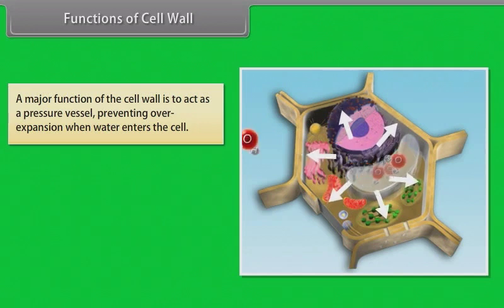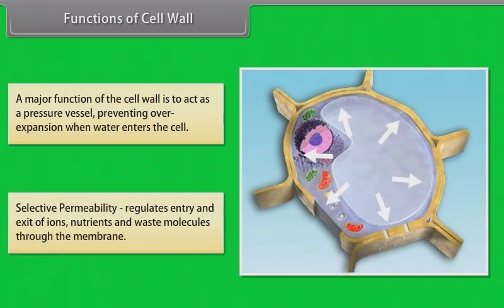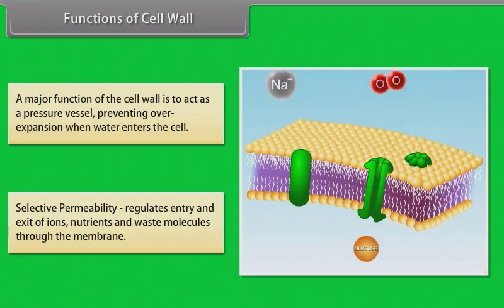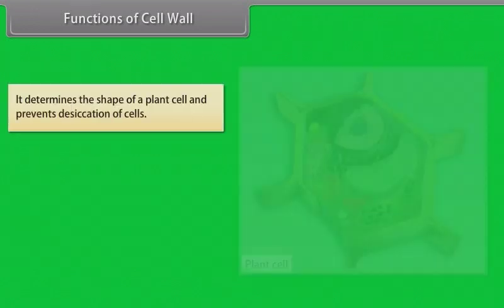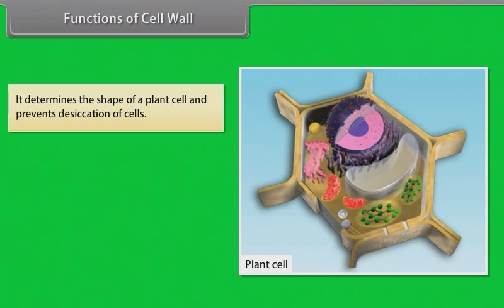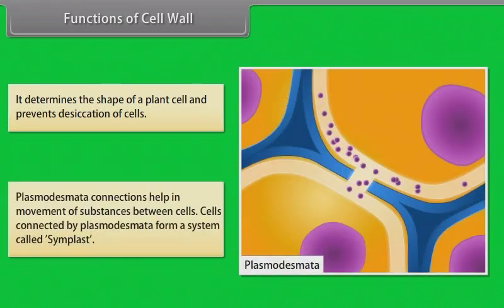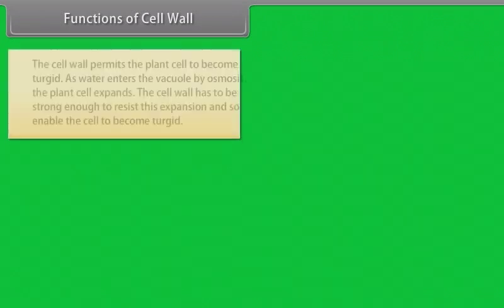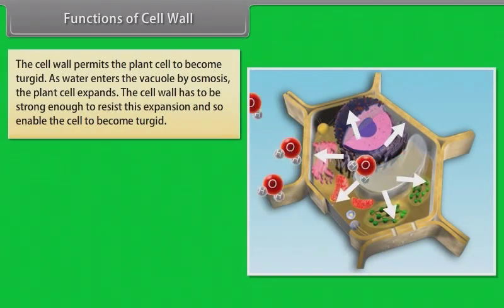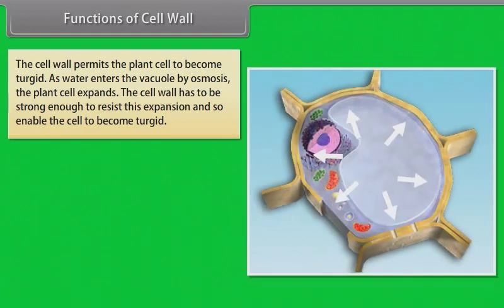Functions of cell wall: A major function of the cell wall is to act as a pressure vessel, preventing overexpansion when water enters the cell. Selective permeability — it regulates entry and exit of ions, nutrients and waste molecules through the membrane. It determines the shape of a plant cell and prevents desiccation of cells. Plasmodesmata connections help in movement of substances between cells; cells connected by plasmodesmata form a system called the symplast. The cell wall permits the plant cell to become turgid as water enters the vacuole by osmosis, and the cell wall must be strong enough to resist this expansion.